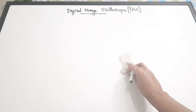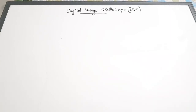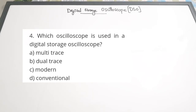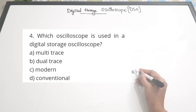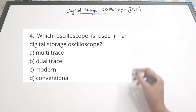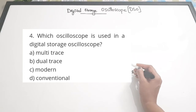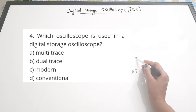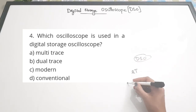Third question: What oscilloscope is used in DSO for displaying purpose? Options: A - multi trace, B - dual trace, C - modern, D - conventional. There is another type called dual trace oscilloscope, but in DSO we are using the same display device used in CRO - the cathode ray tube. So it is a conventional one. Correct answer is D.